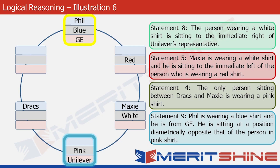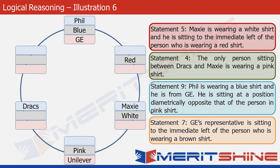The next statement we use is statement seven. It says that GE's representative is sitting to the immediate left of the person wearing a brown shirt. This means the person in the brown shirt would be sitting to the immediate right of Phil, whose box is highlighted now. So the man in brown is placed one position to the right of Phil's box.